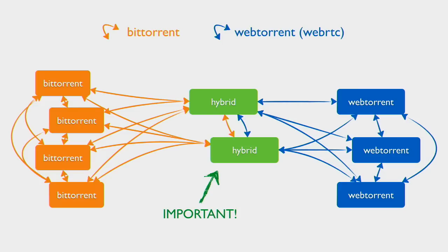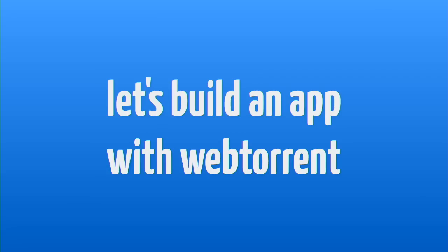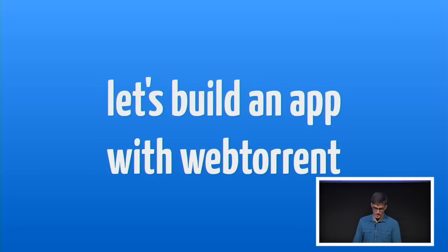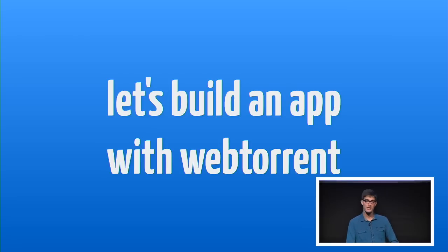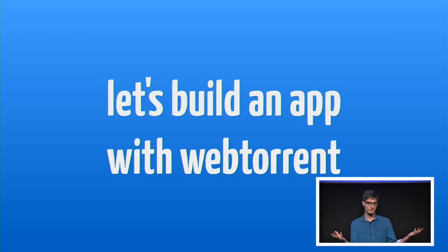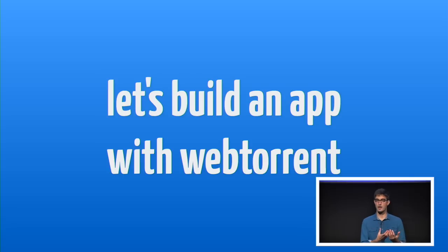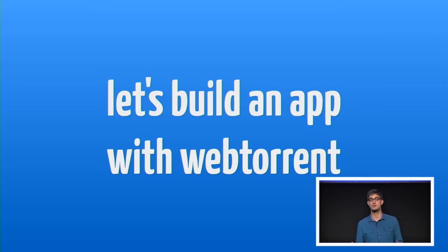I want to show you guys what it would look like to actually use the WebTorrent API to build an application, so you can get an idea of how easy it is to work with. I've built a Node module called WebTorrent. You can use it in Node and in the browser, and it's the same module in both places. When you require it in Node, you get a BitTorrent client that you can use to download whatever you want. If you require it in the browser using something like Browserify, you get a client that uses WebRTC to talk to other peers and can only talk to other web nodes.